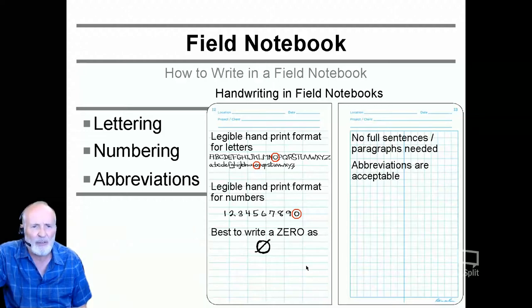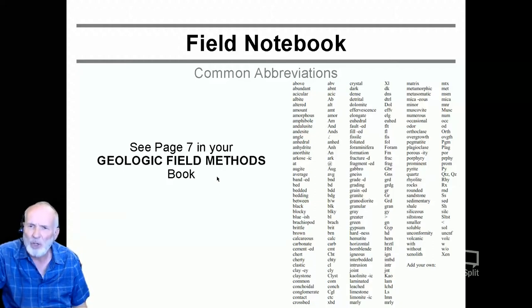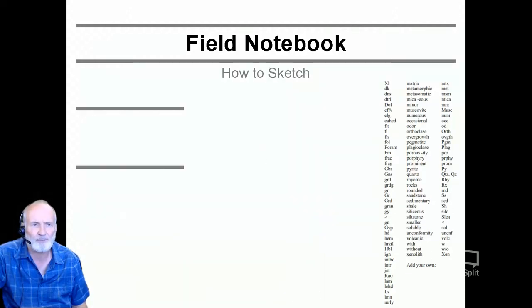Here's some common abbreviations in your notebook: above ABV, abundant ABNT, acicular, albite AB. By the way, for minerals there's a whole list of how minerals should be abbreviated given by the Mineralogical Society of America. You can come up with your own: without W slash O, with is just the W maybe with a slash, smaller, larger. It's a really good example of what you can use. In your field methods booklet, page seven, there is a list.